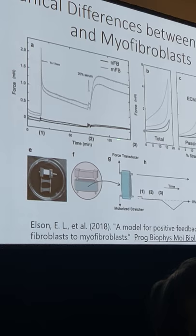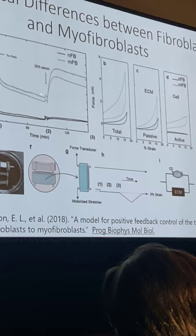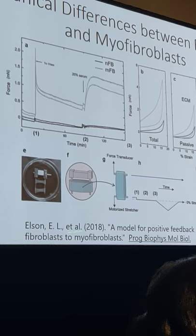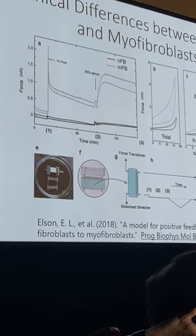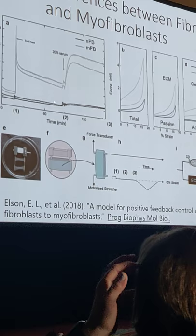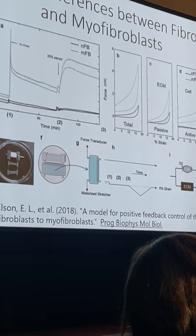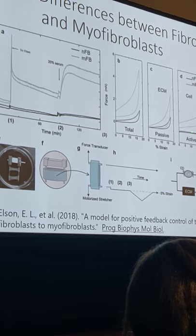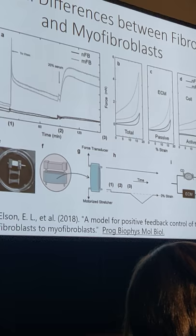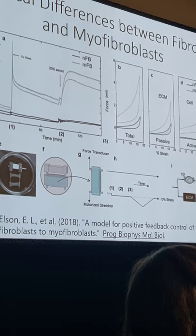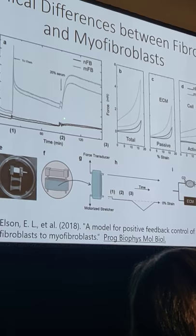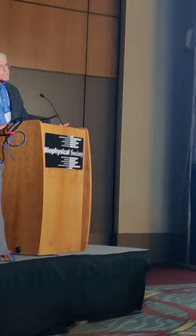We could also look at the increase in contractility of the tissue when myosin was activated in these cells. We were comparing normal fibroblasts and activated myofibroblasts. The normal fibroblasts have a much lower stiffness than the myofibroblasts, and when activated with a myosin activator, the normal fibroblasts barely develop any contractile force while the myofibroblasts develop a lot. These are the kinds of measurements we are still doing.